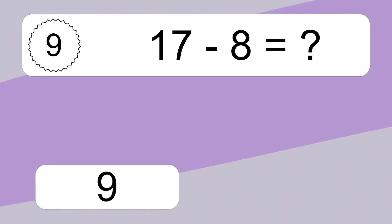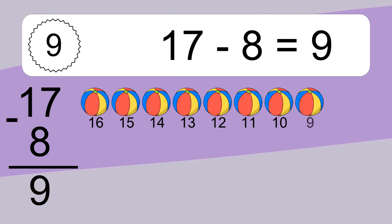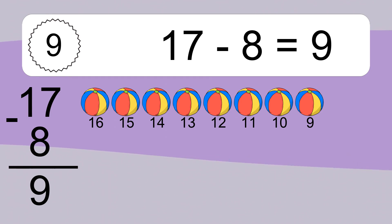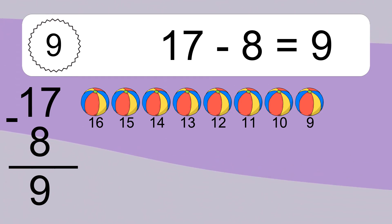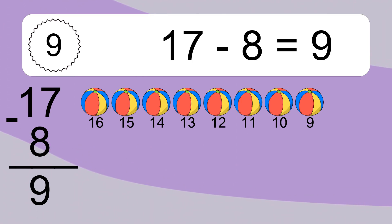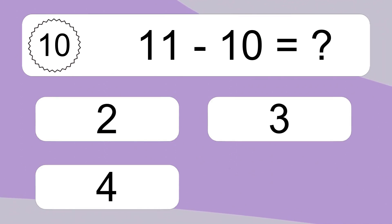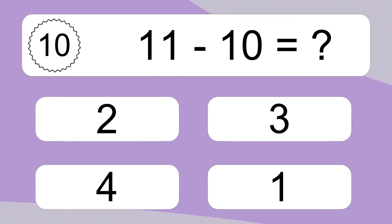17 minus 8 equals what? 17 minus 8 equals 9. Let's count it. 16, 15, 14, 13, 12, 11, 10, 9.